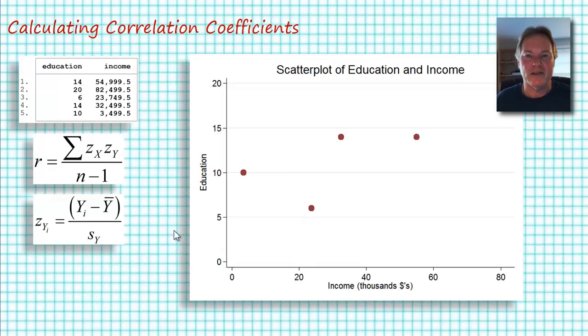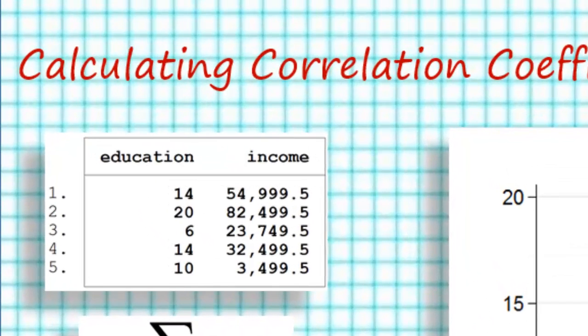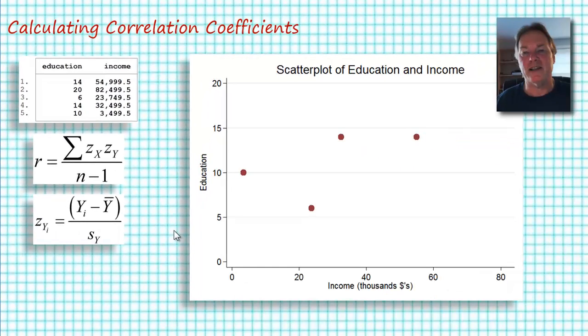I've taken a subset of five cases measuring education, number of years of education, and income in dollars. You can see the data over on the left. Our first individual had 14 years of education, the second person 20 years of education, and so forth. Those first two people were paired with income values of 54,999.5 and 82,499.5. One of the first things I like to do when I calculate a correlation coefficient is to produce a scatter plot, and since we have so few points, a scatter plot is pretty instructive here.